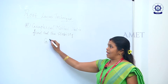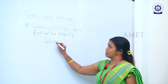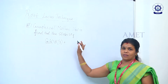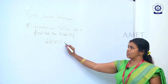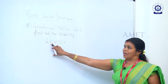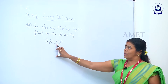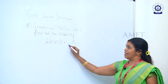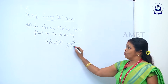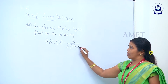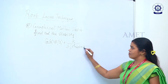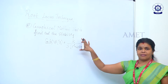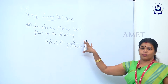The open loop system can be represented by G(s) × H(s), which is equal to some transfer function. Taking the example: G(s) × H(s) = K divided by s(s² + 4s + 13). This is the open loop transfer function we will use.